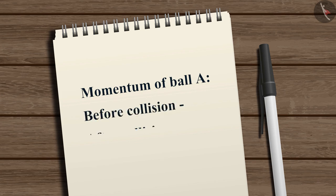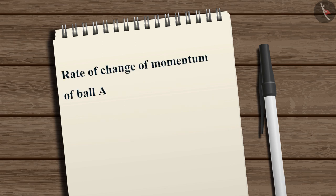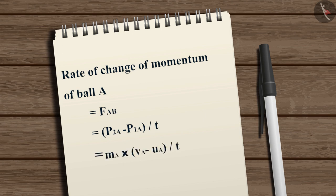Now, from the definition of momentum, we can say that the momentum of ball A before and after the collision is M_A·U_A and M_A·V_A respectively. Then, the rate of change of momentum of ball A, which is equal to F_AB, equals (M_A·V_A − M_A·U_A) divided by T, which simplifies to M_A multiplied by (V_A − U_A) divided by T.